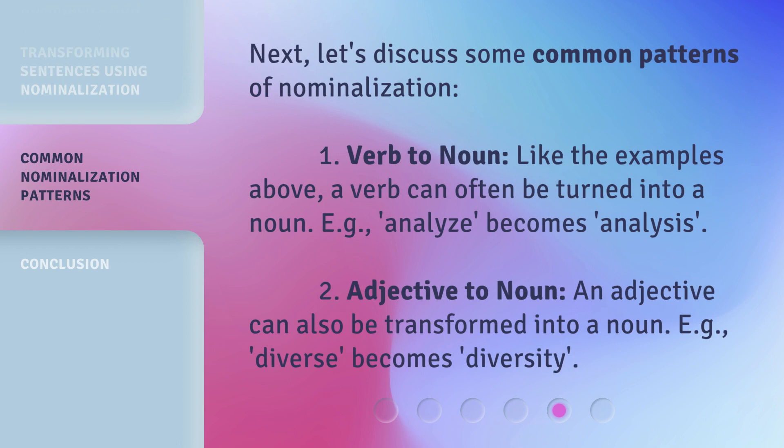Next, let's discuss some common patterns of nominalization. 1. Verb to noun: like the examples above, a verb can often be turned into a noun. E.g., 'analyze' becomes 'analysis.' 2. Adjective to noun: an adjective can also be transformed into a noun. E.g., 'diverse' becomes 'diversity.'